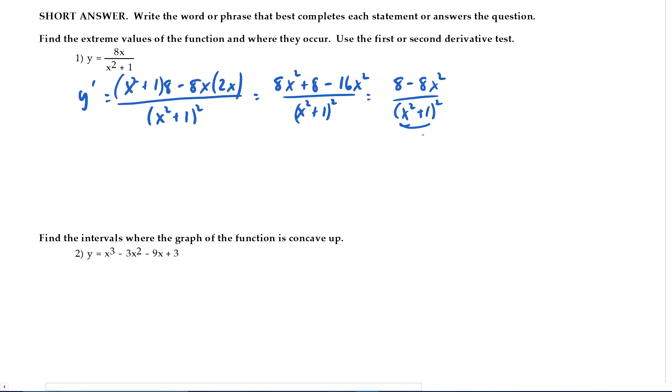And so x squared plus 1 is always going to be greater than zero. So the denominator is never zero. So we just have to worry about when this is zero. Well, that happens when the numerator is zero. So when 8 minus 8x squared equals zero, or when 8x squared equals 8, x squared is 1, so x is plus or minus 1. So those are my critical points.